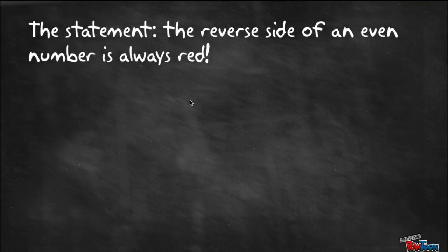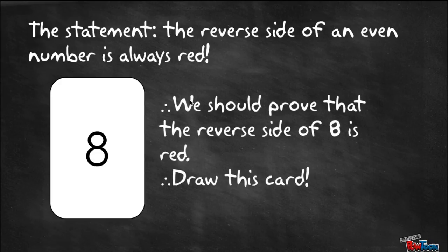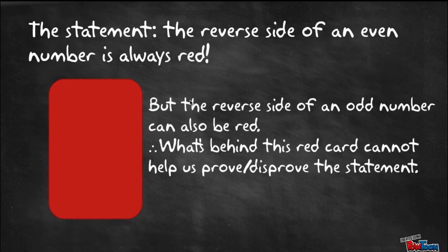So how does this apply in our case? The statement is the reverse side of an even number is always red, so we should prove that the reverse side of 8 is red, which means we should draw this card. But the reverse side of an odd number can also be red, so what's behind this red card cannot help us prove or disprove the statement.